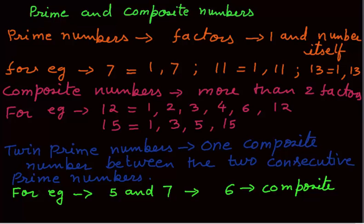I will consider one more example: 29 and 31. You can see that 29 and 31 are both prime numbers, and the number between them is 30, which is a composite number.